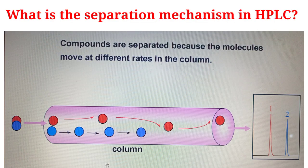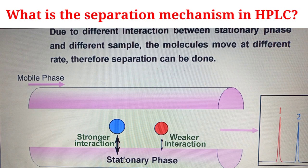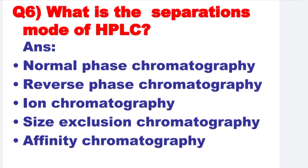Next: What is the separation mechanism in HPLC? Compounds are separated because the molecules move at different rates in the column due to different interactions between the stationary phase and sample. The molecules move at a different rate; therefore, separation can be done. Next: What are the separation modes of HPLC? The separation modes are normal phase chromatography, reverse phase chromatography, ion chromatography, size exclusion chromatography, and affinity chromatography.